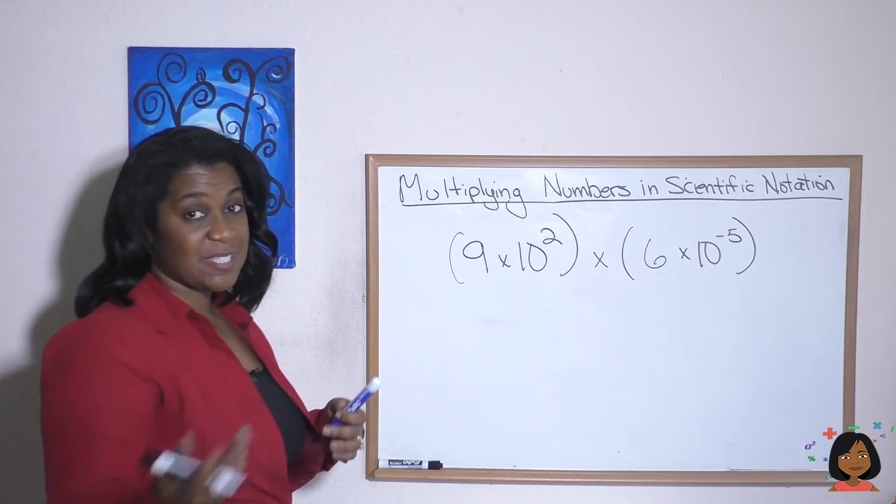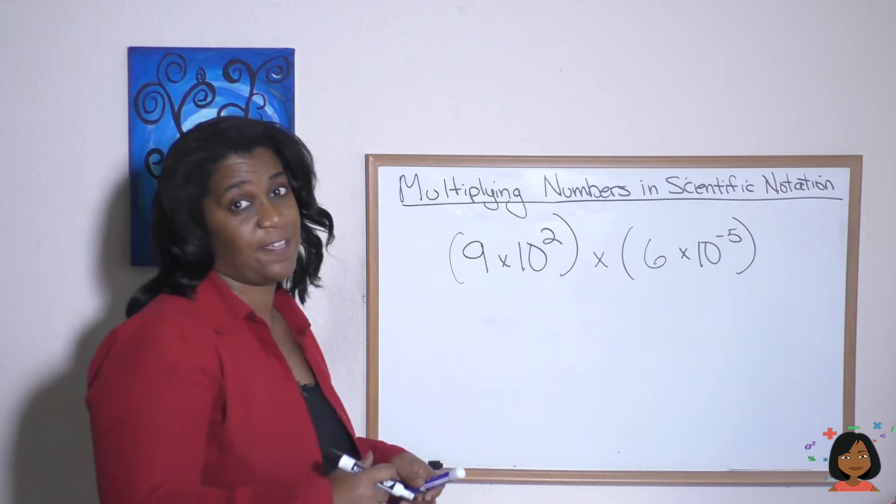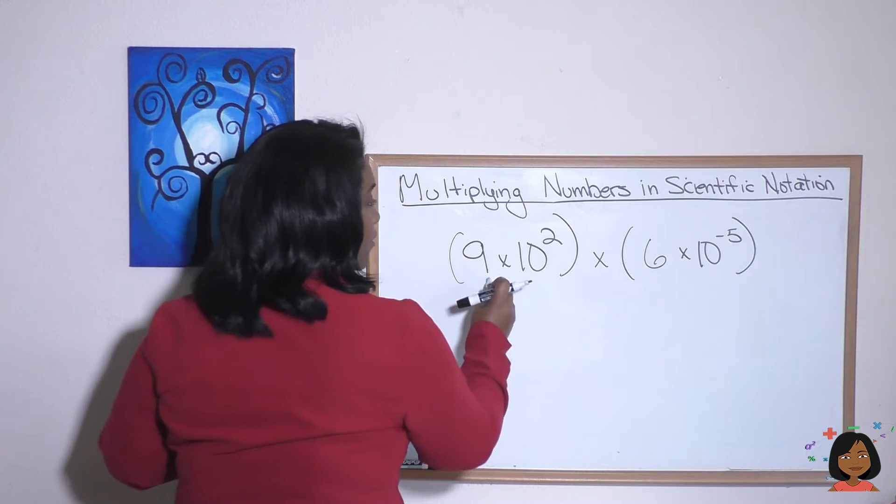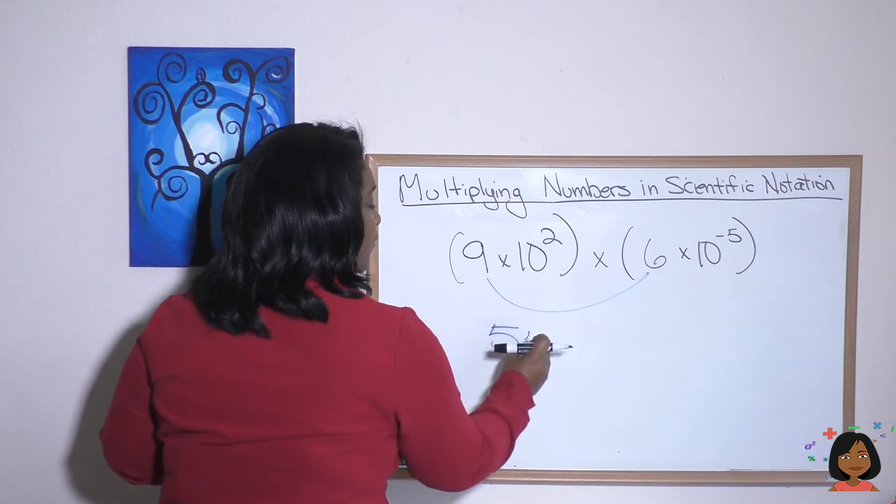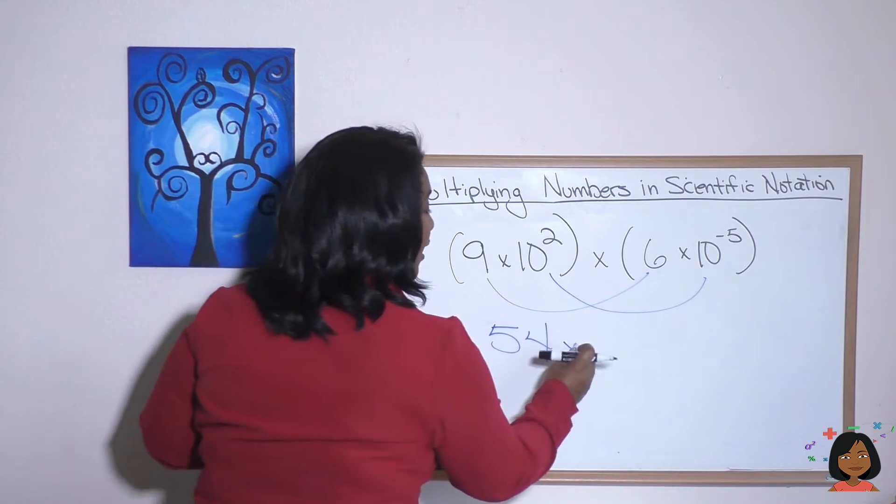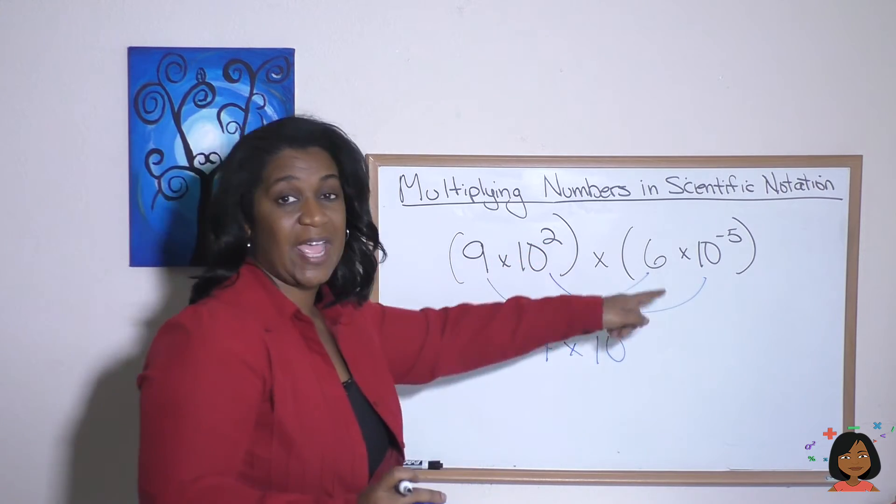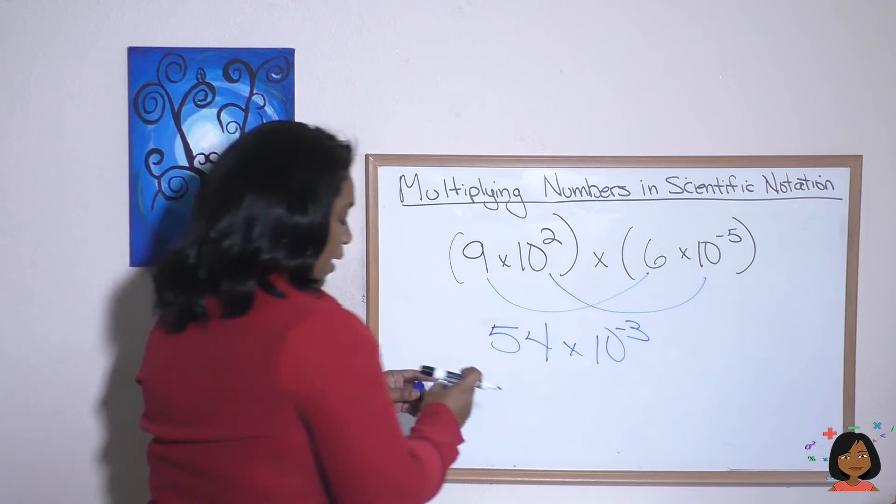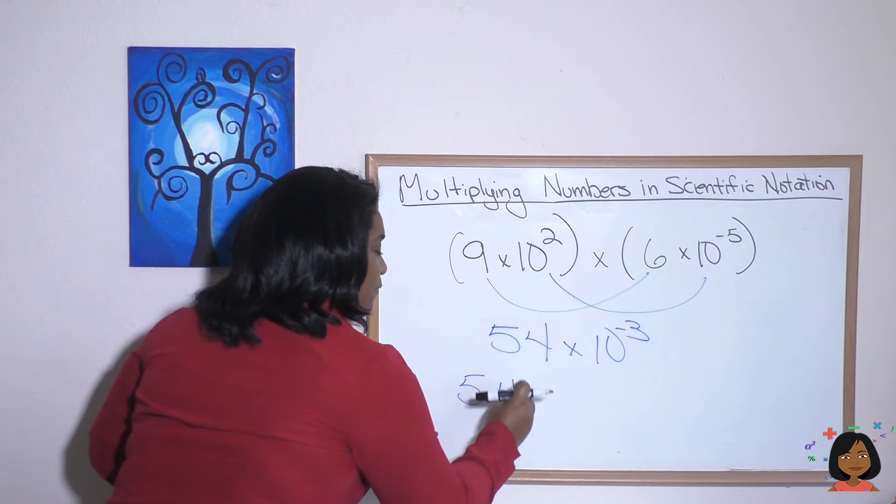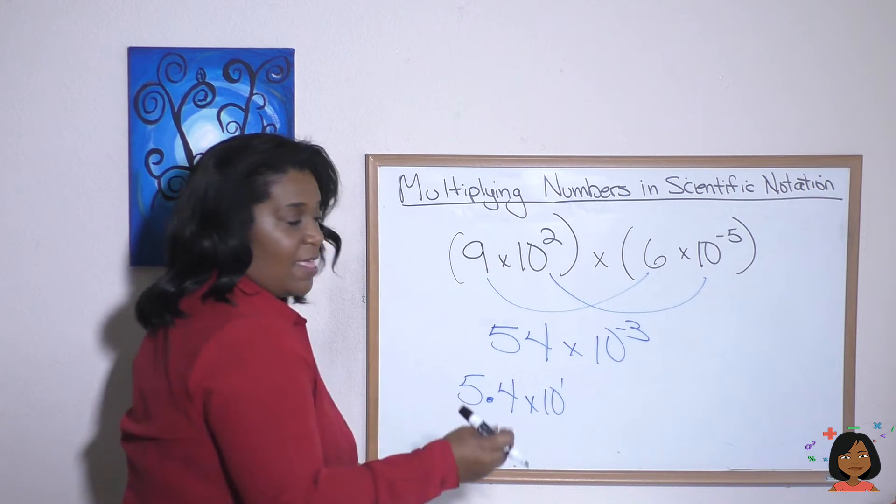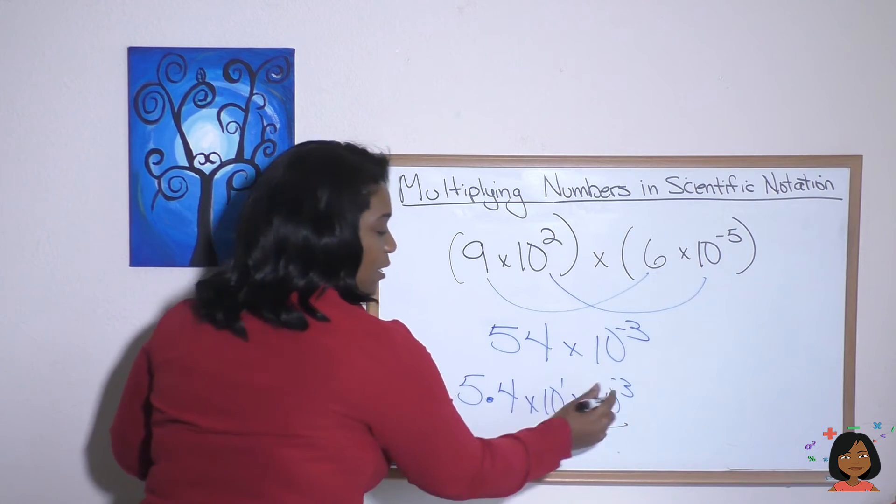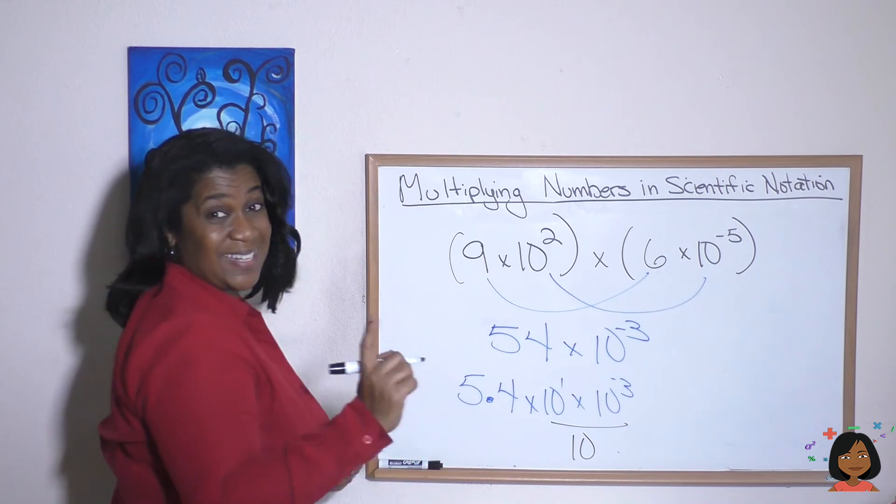Let's try another problem. 9 times 10 squared times 6 times 10 to the negative fifth. So this time we're bringing in a negative exponent. How do things change? So we are going to first do our 9 times 6, which gives us 54. And then secondly, we do our multiplication, but we add our exponents, which means we're going to get 10 to the 2 plus a negative 5 is a negative 3. But what I just told you is we can't keep this 54 as it is. So 54 is the same thing as saying 5.4 times 10 to the first. Then we multiply it times this 10 to the negative third. So this part is going to give us 10 to the negative 2.